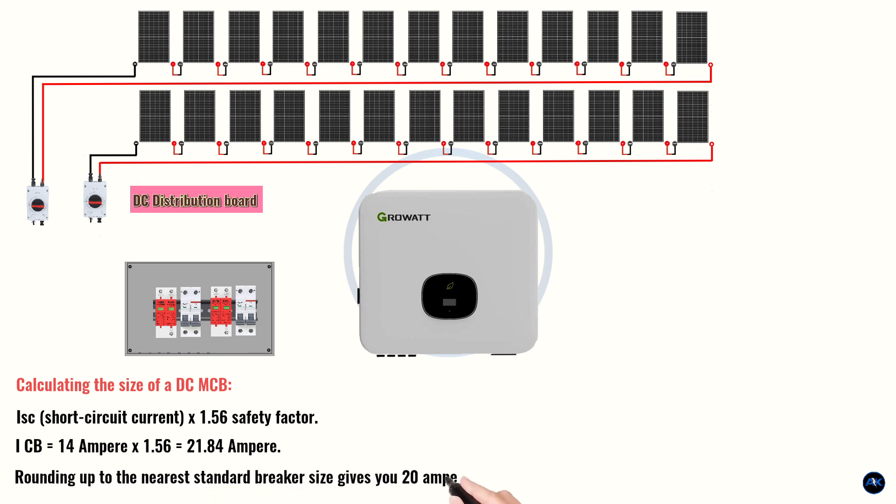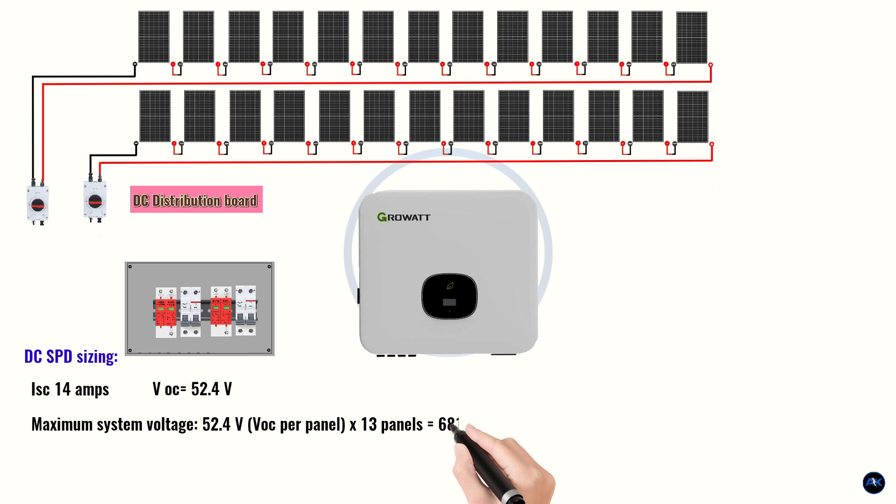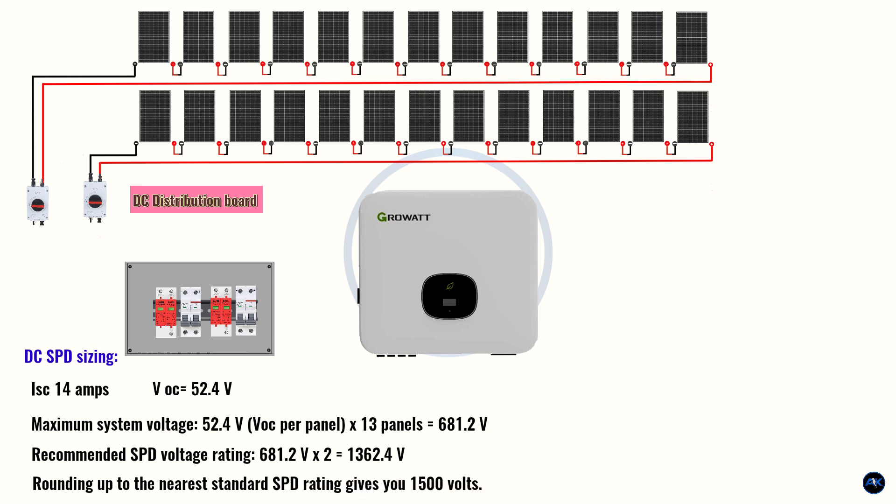DC SPD sizing. For a solar string with 13 solar panels connected in series, each having an ISC of 14 amperes and a VOC of 52.4 volts, the recommended DC SPD size would be 1500 volts. Here's the calculation: maximum system voltage 52.4V VOC per panel X 13 panels equals 681.2 voltage. Recommended SPD voltage rating: 681.2V X 2 equals 1362.4 voltage. Rounding up to the nearest standard SPD rating gives you 1500 volts. Additional factors to consider: number of strings. If you have multiple strings, each string should have its own SPD.